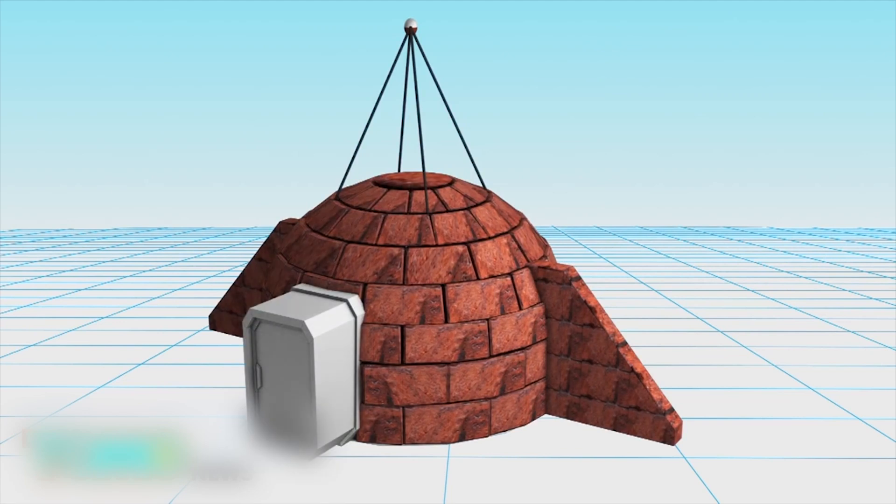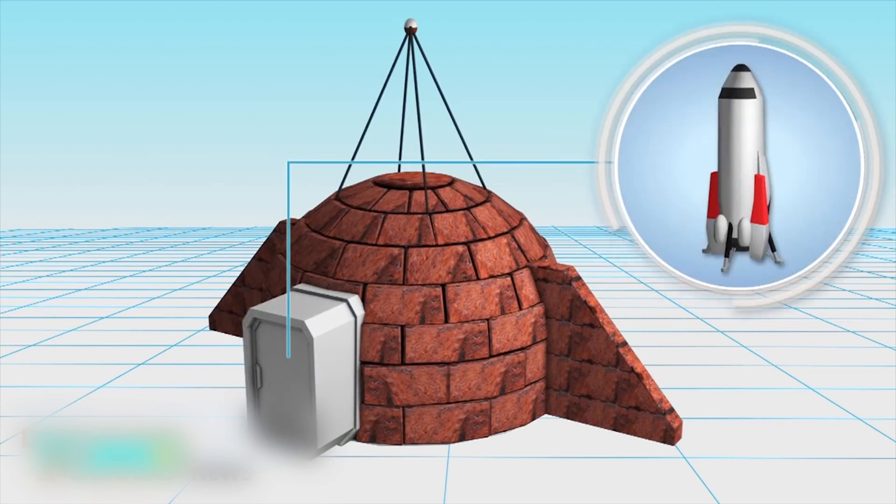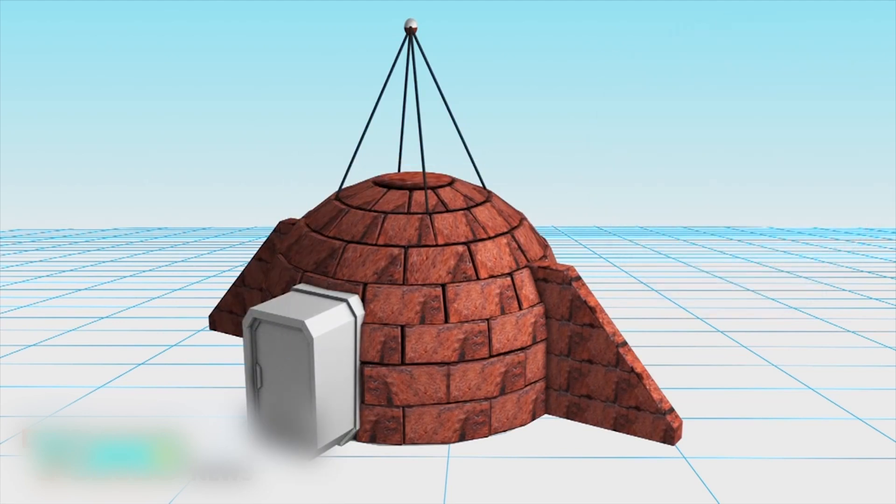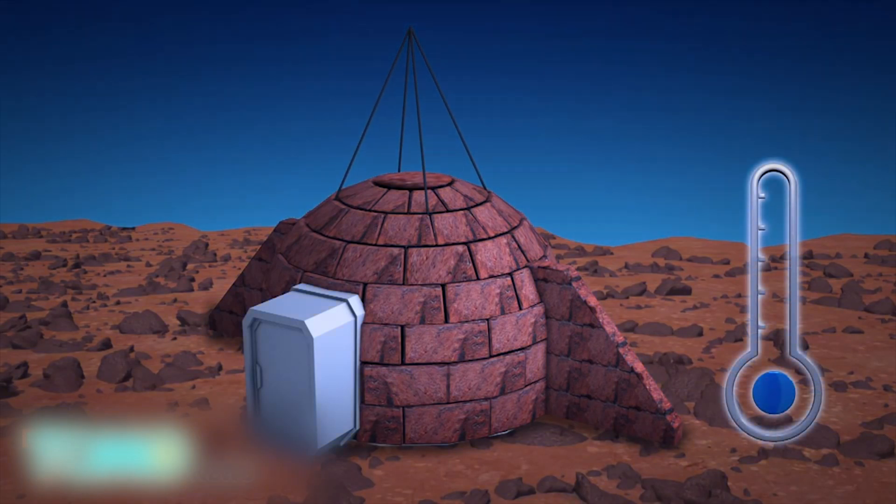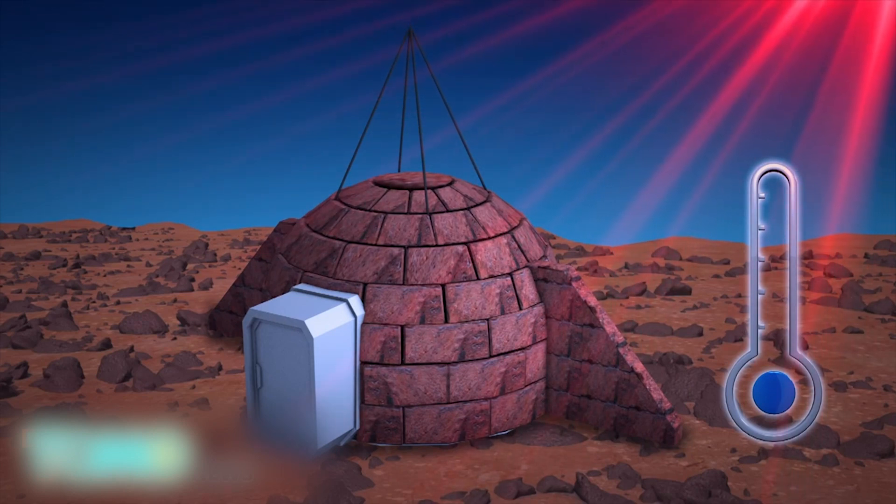Recycled spacecraft parts, including a double airlocked entrance, would be used as the front door. Experts believe the dome would be able to withstand the Martian environment, including extremely low temperatures, micro-meteorite impacts, a thin atmosphere, and cosmic radiation.